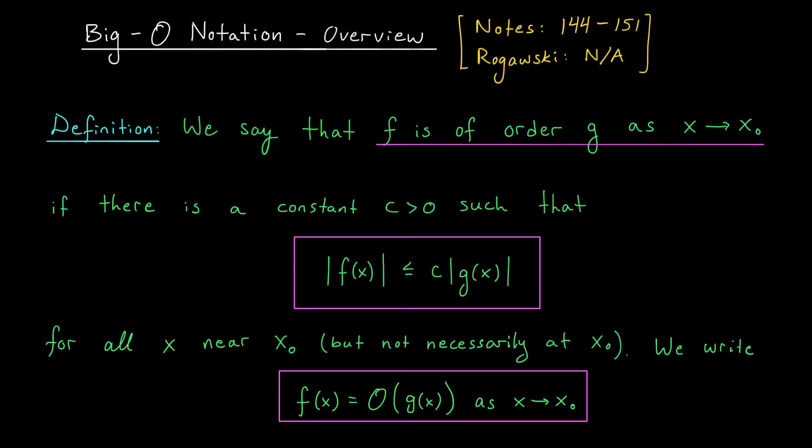Hi everyone, and welcome back. In this lesson, I'm going to show you a brand new notation that will allow us to conveniently describe how quickly a function is growing near a given point. It's called big O notation, and it's used very commonly in computer science to describe the complexity of algorithms.